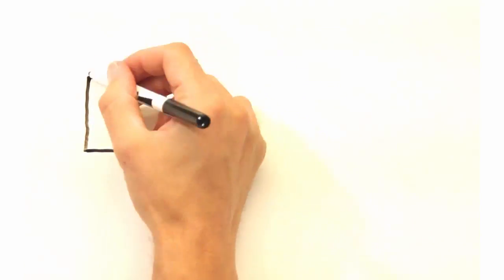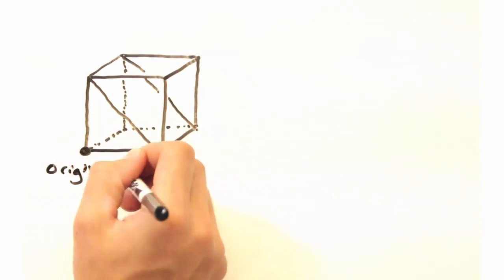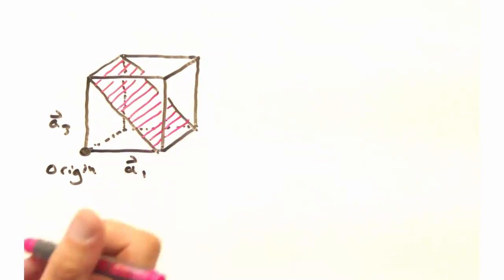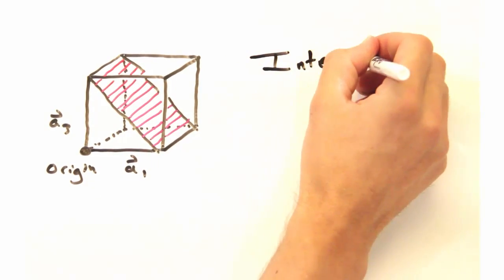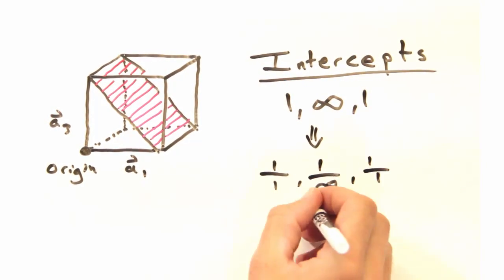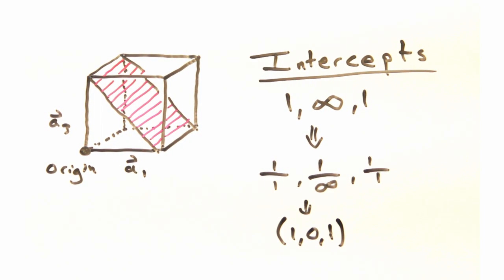But what if we have a plane like this where it never crosses an intercept? Would we just treat that intercept as infinity and when we take a reciprocal of 1 over infinity, 1, we'd get the 1, 0, 1 plane?